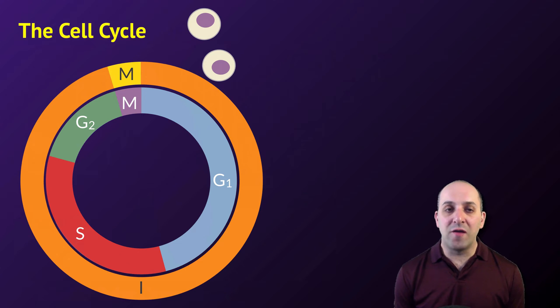Eukaryotic cells follow what's known as a cell cycle, which takes them from the point of division through to the point in which they're going to divide again, if they're actually going to divide again. Most of a cell's life is not spent in division. It's actually spent in a stage known as interphase, which is shown here in orange. We break interphase up into three major sub-phases.